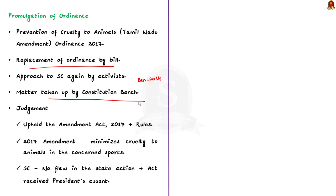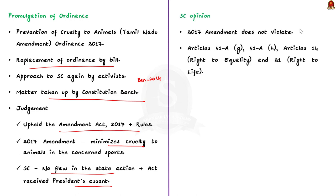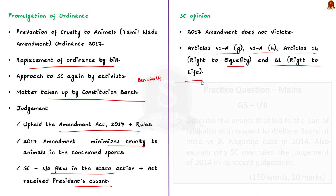The constitutional bench judgment has now come. The Supreme Court upheld the Prevention of Cruelty to Animals Tamil Nadu Amendment Act 2017 and the Prevention of Cruelty to Animals Conduct of Jallikattu Rules 2017. The court stated that the 2017 amendment minimizes cruelty to animals and so Jallikattu will not fall under the definition of cruelty in the 1960 Act. The amendment received presidential assent. The court also said the amendment does not violate Articles 51A(g) and 51A(h) regarding environmental protection and scientific temper, nor Articles 14 and 21 of the Constitution.